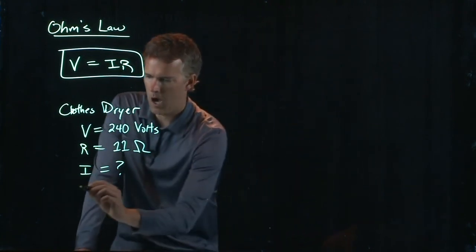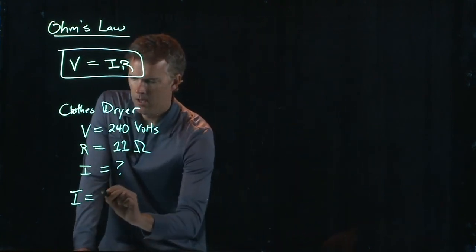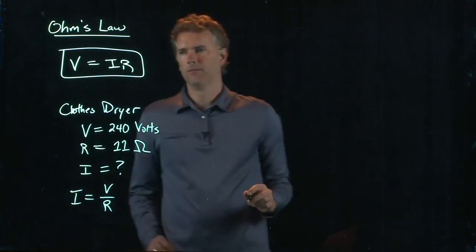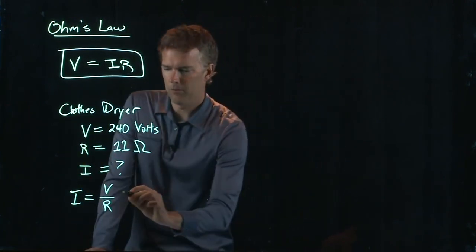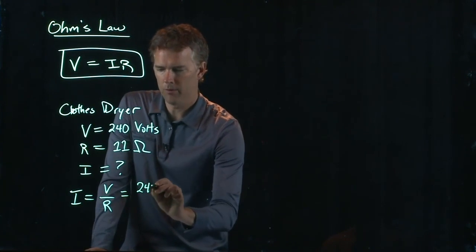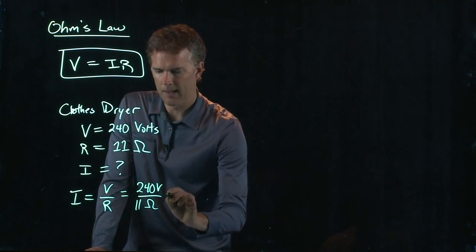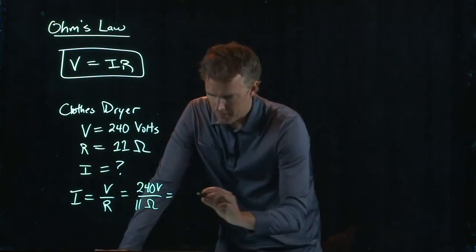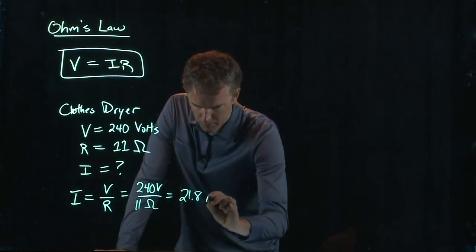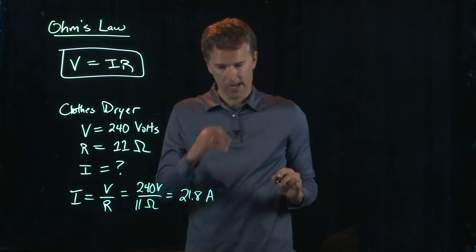All right, no problem. So, I is V over R, and we have those numbers. This is 240 volts divided by the resistance, 11 ohms, and if you punch in those numbers, you should get 21.8 amps.